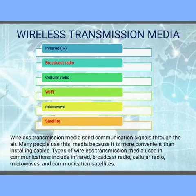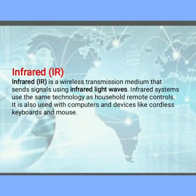Wireless transmission media is used to send communication signals through the air — wires are not required. Many people use this media because it is more convenient than installing cables. Types of wireless transmission media used in communications include infrared, broadcast radio, cellular radio, Wi-Fi, microwave, and satellites.